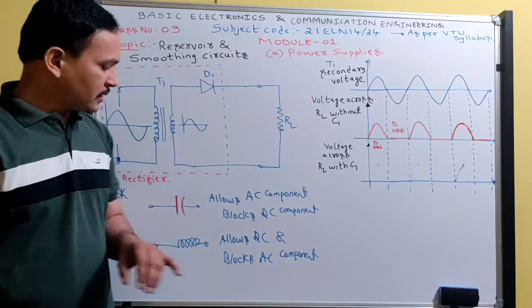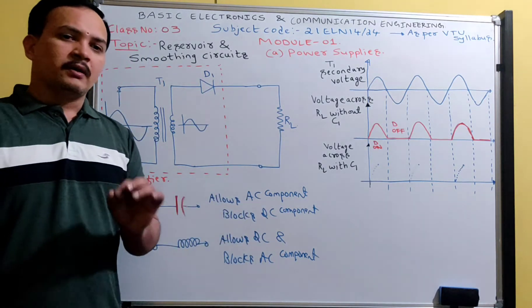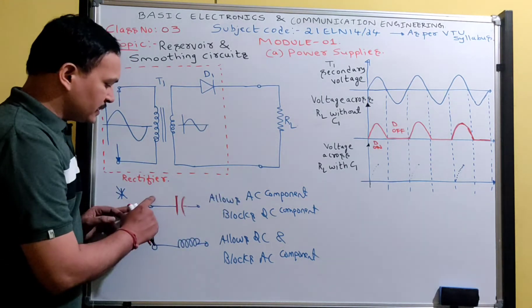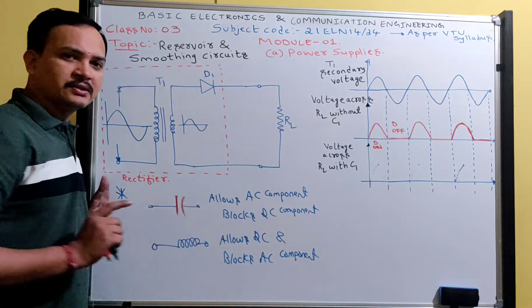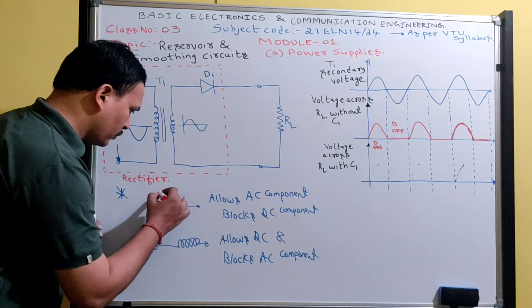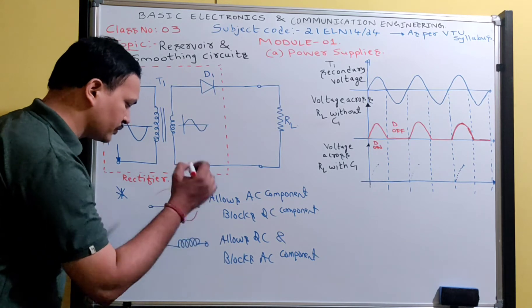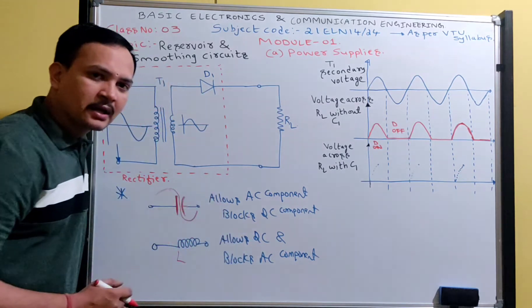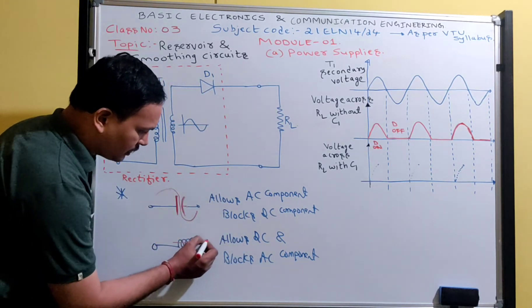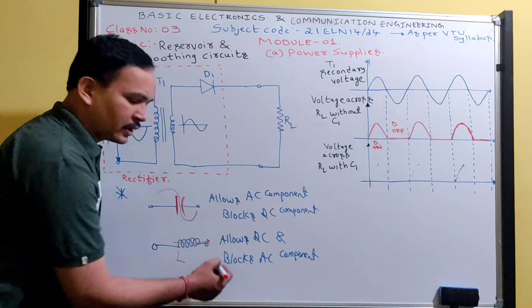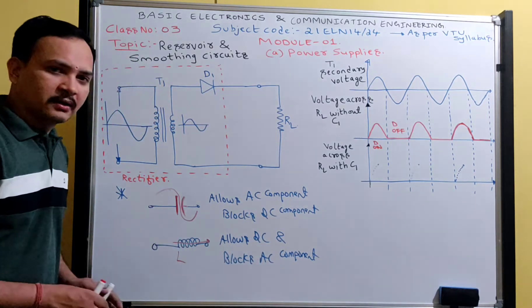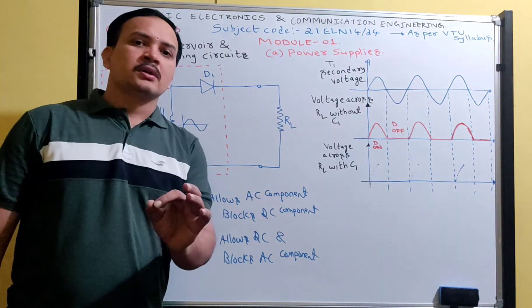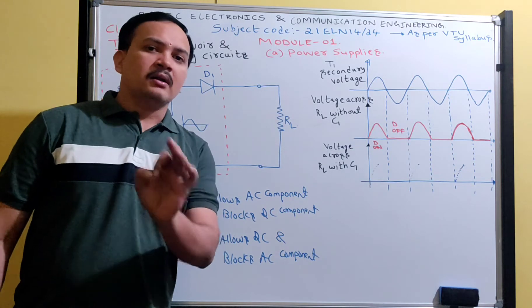The concept of the capacitor: keep in mind, a capacitor allows AC component and blocks DC. If I give a DC signal, the capacitor is going to block it. If I apply an AC signal, the capacitor allows it. Similarly, an inductor allows DC component and blocks the AC component.